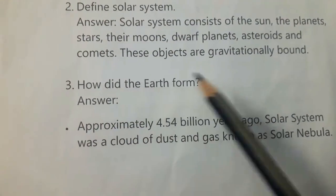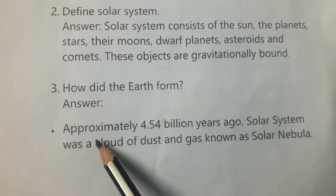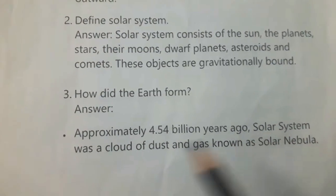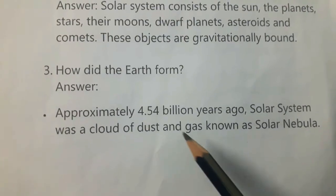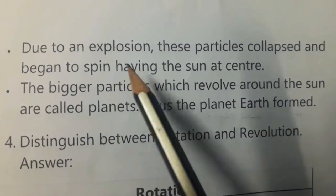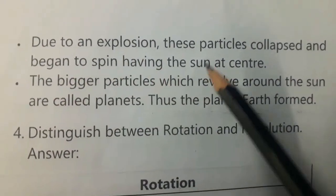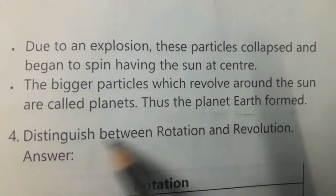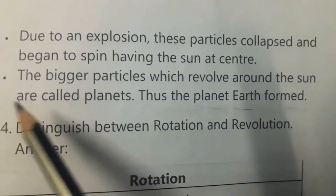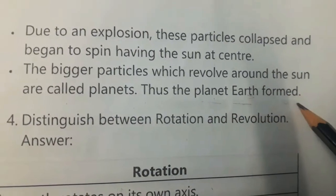How did the Earth form? Approximately 4.54 billion years ago, the solar system was a cloud of dust and gas known as the solar nebula. Due to an explosion, these particles collapsed and began to spin, having the sun at the center. The bigger particles which revolve around the sun are called planets. Thus, the planet Earth formed.